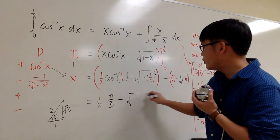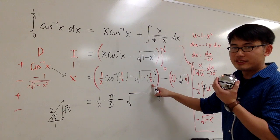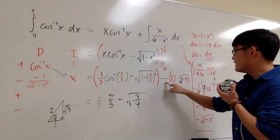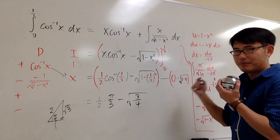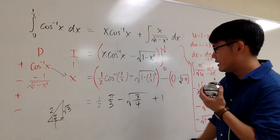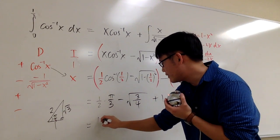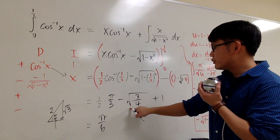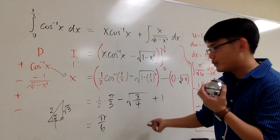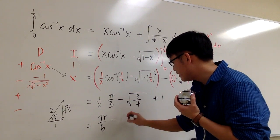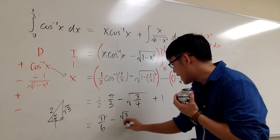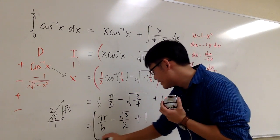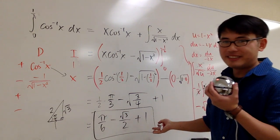So we have pi over 6 (from 1/2 times pi over 3), minus square root of 1 minus 1/4, which is 3/4. And the minus minus gives plus 1. Taking the square root of 3/4 gives square root of 3 over 2. So the final answer is pi over 6 minus square root of 3 over 2 plus 1. That's the answer.